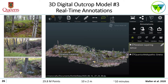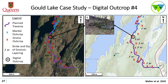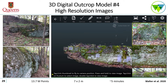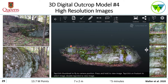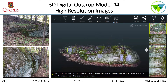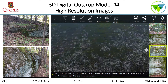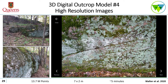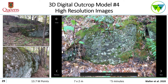This is the fourth and final 3D digital outcrop model of the quartzofeldspathic gneiss. What we wanted to demonstrate was how high-resolution images can be incorporated into 3D digital outcrop models and, more specifically, how this can be automatically geo-referenced. While scanning, high-resolution images can be taken with the tablet and directly geo-referenced into the 3D digital outcrop model. You can see the photo that was taken and where it's incorporated into the model, and scroll through different shots to see exactly where they were geo-referenced within the model.